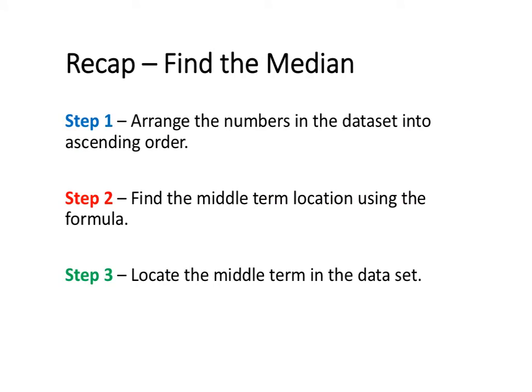Before we have a look at an example, we'll just do a quick recap on how to calculate the median. The first step is to arrange all numbers in ascending order. The second step is to locate the median term location using the formula n plus 1 divided by 2, and then using the value you get from that formula, locate the middle term in the data set.